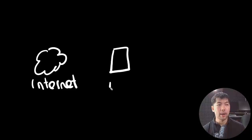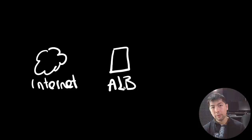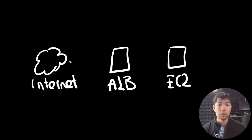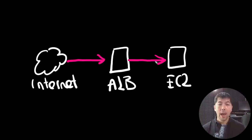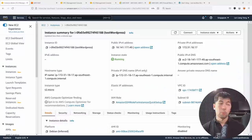In terms of architecture, this is how it looks. First, you have the internet — the place where anyone can access your app. Second, you have the Application Load Balancer, or ALB, which routes different types of requests to different backend resources. In this case, we have an EC2 virtual server. Traffic flows from the internet to the ALB and then targets the EC2 instance, giving access to the web server and the site.